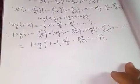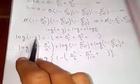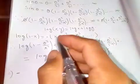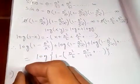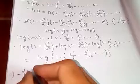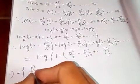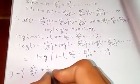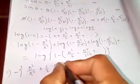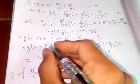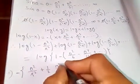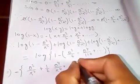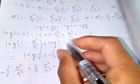Applying the formula log(1 - x) to each term: the first term gives -(θ²/π²) - (1/2)(θ⁴/π⁴) - and so on; the second term gives -(θ²/2²π²) - (1/2)(θ⁴/2⁴π⁴) - and so on.